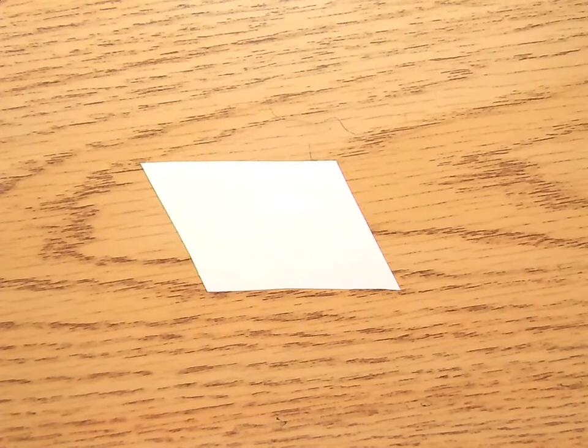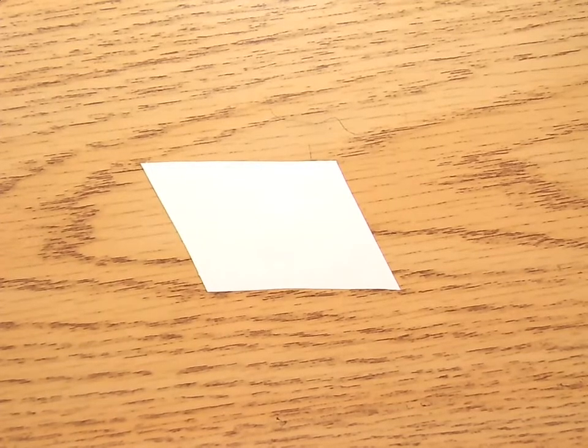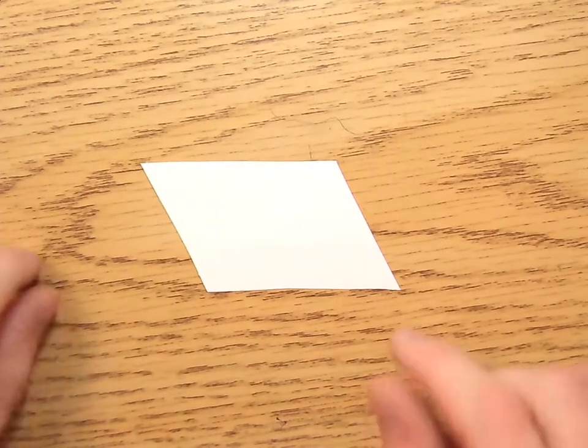How to do a glide reflection tessellation. It's very similar to the translation one that we've already done, but there's one key difference in that you will reflect one of the sides and only one of those sides.